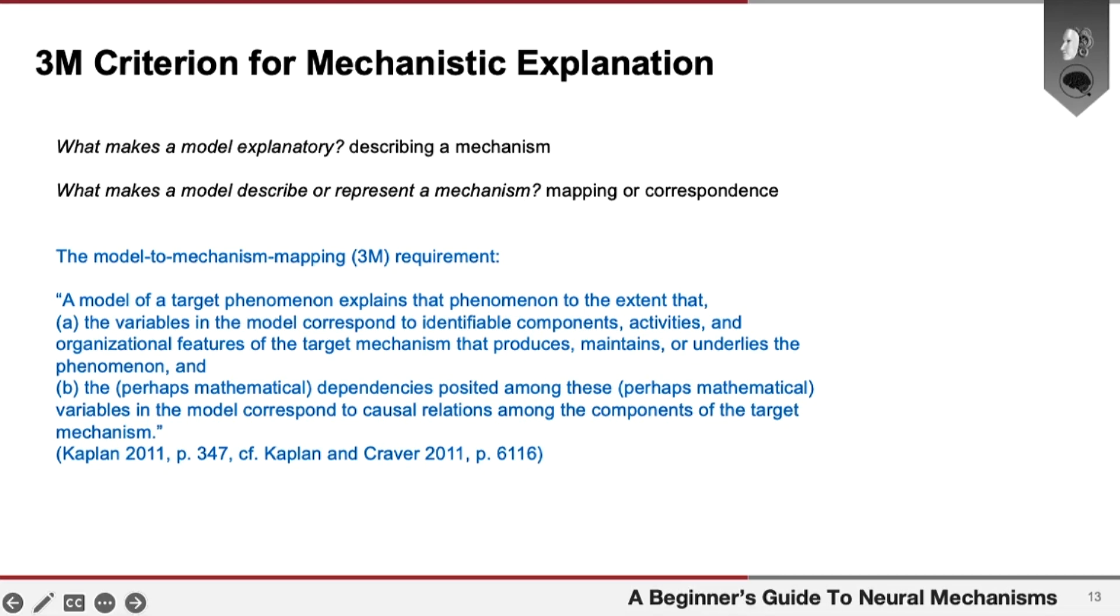And this is what they answer with what they call the 3M, or model-to-mechanism mapping criterion. The basic idea of the model-to-mechanism mapping criterion is quite straightforward. If you think of a map of a city, what's depicted in that representation, in that map, is some of the entities, not all of the entities that are there in the city, and their connections between one another in space. You can think of a scientific representation of a mechanism as, again, pinpointing some of the entities which are there in that living system, the ones that are crucial to the mechanism, and depicting their relationship to one another.